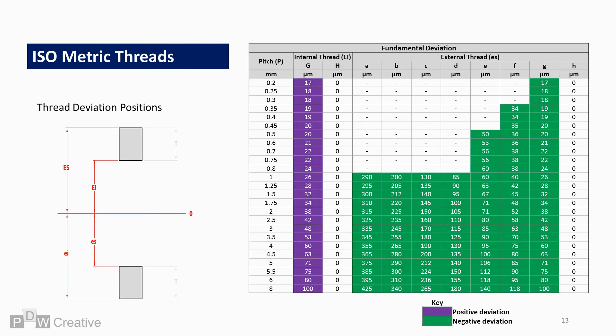Internal, external thread or nut and screw tolerances are driven by the pitch. As the pitch increases, more external thread deviation positions become available. Position G and H are available for all threads regardless of the pitch.